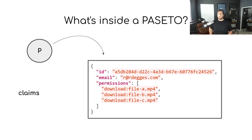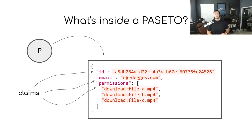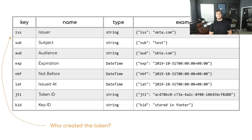What's inside of a PASETO? We already know it's just some JSON data, but the JSON data you store inside a PASETO are called claims. Every JSON key you stick in is going to be a claim. For example, a PASETO with an ID, an email, and a permissions field would have three claims. You can stick as much data inside a PASETO as you want and those things are referred to as claims. One of the cool things about PASETOs is that there's also a certain amount of reserved claims that all have special functions.